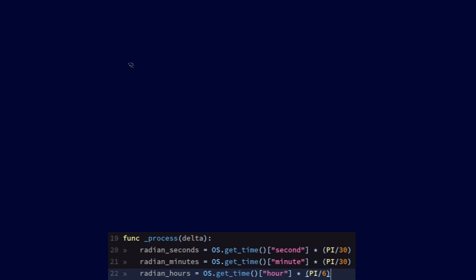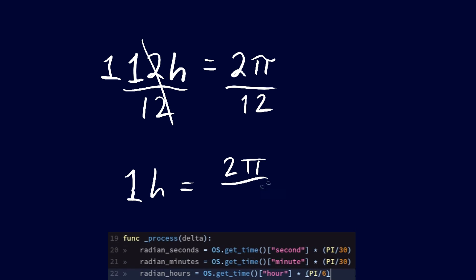Well, it's the same thing. We know for an hour to move all 360 degrees around the clock, it will have to move 12 hours. And we know that 360 degrees is the same as 2 pi in radian value. So we divide both sides by 12 so we can figure out what 1 hour would be in radian value. That leaves us with 1 hour is equal to 2 pi divided by 12. And then I simplified it again, which made this into pi divided by 6.